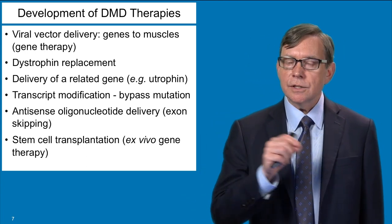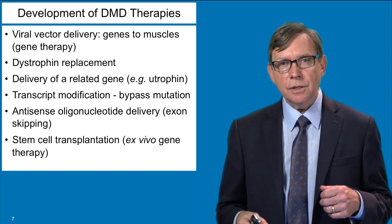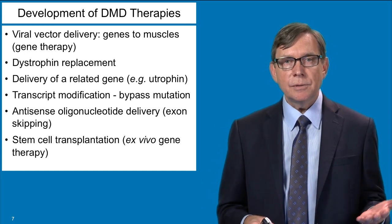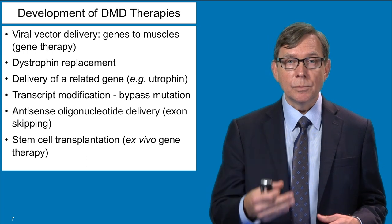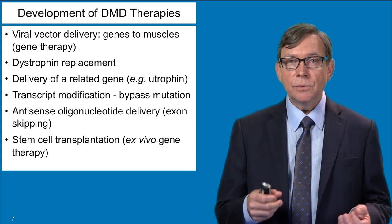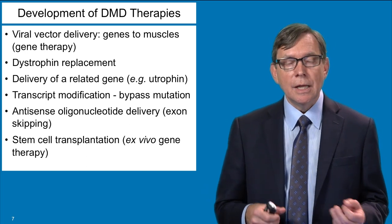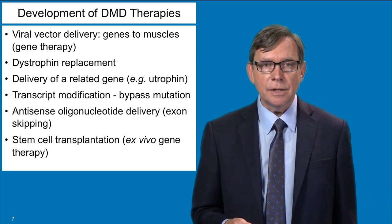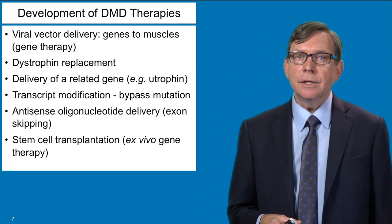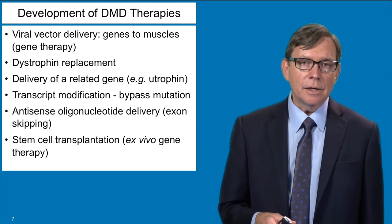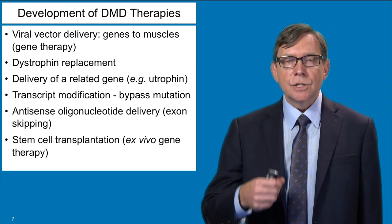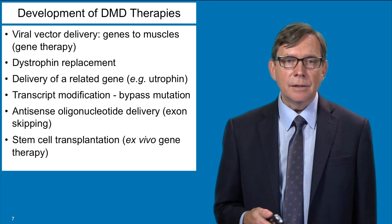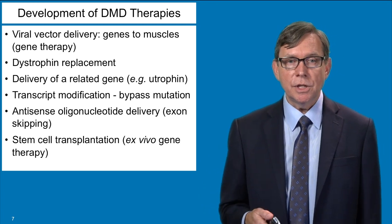Another approach is to trick the cell into ignoring a mutation. The problem with Duchenne muscular dystrophy is you have a mutation in the dystrophin gene that can prevent production of either a normal messenger RNA or a normal protein. If you can get the cellular machinery to skip over or ignore a mutation, you can still produce a protein that would be very functional but may not be quite as large as the full protein. One way to do that is through a technique known as antisense oligonucleotide delivery, which induces exon skipping — causing the cellular RNA machinery to jump right over a mutation that affects the normal splicing of a gene into messenger RNA.